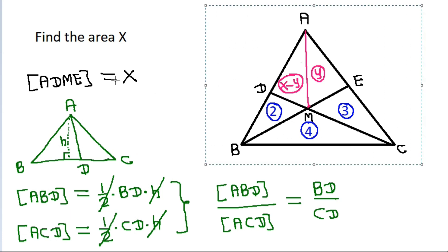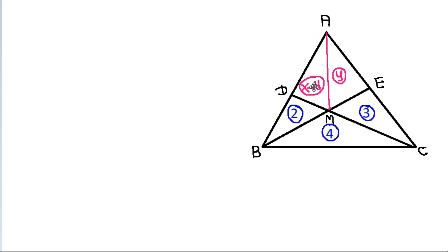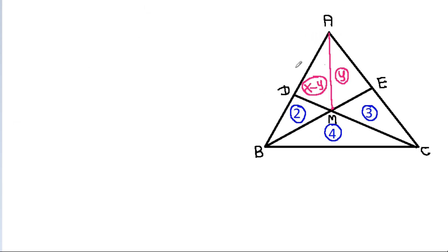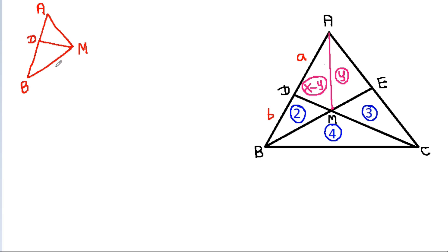Suppose AD is A and BD is B. Then in triangle A, B, M with point D: AD is A, BD is B, this area is 2, and this area is X minus Y. So A divided by B equals X minus Y divided by 2.